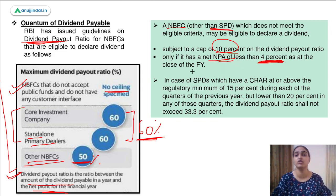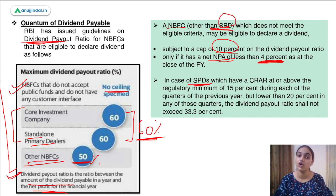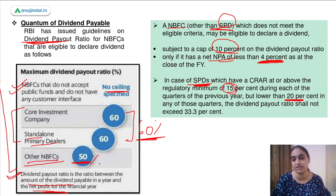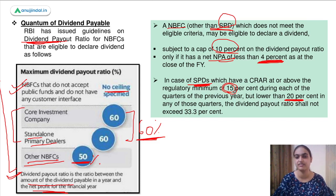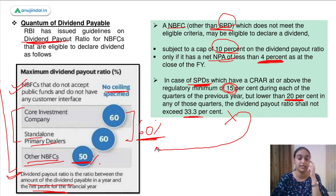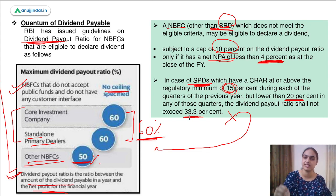For standalone primary dealers that are not meeting the 20% CRAR requirement, they can still declare a dividend if their CRAR is above 15% but below 20%. However, their dividend payout ratio cannot exceed 33.3% — the standard 60% threshold will not apply in this case.